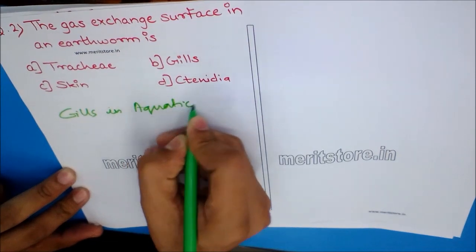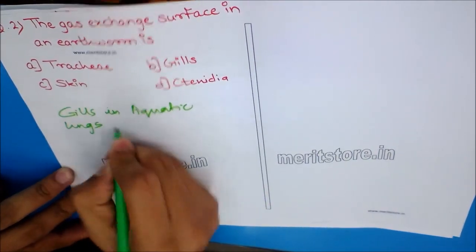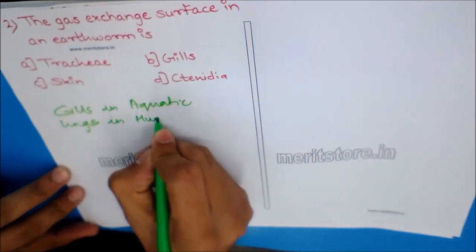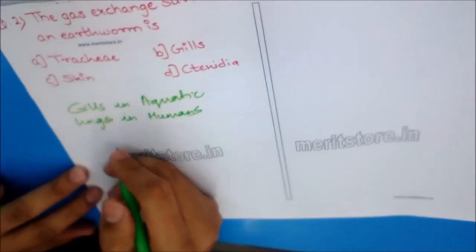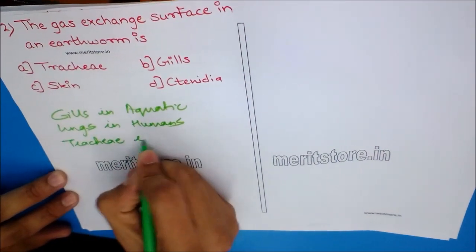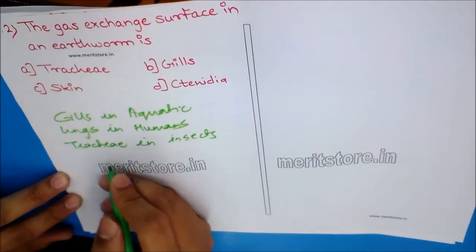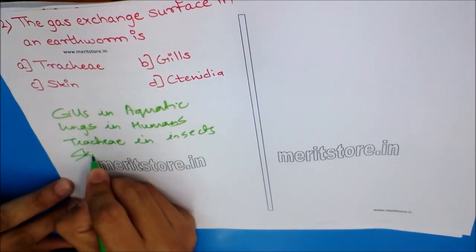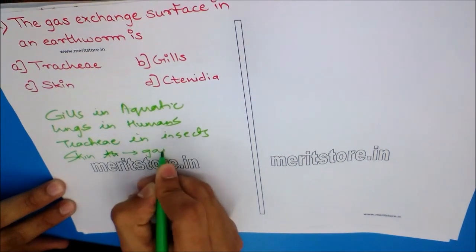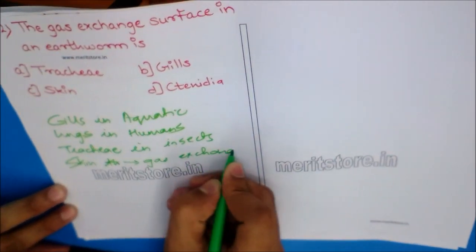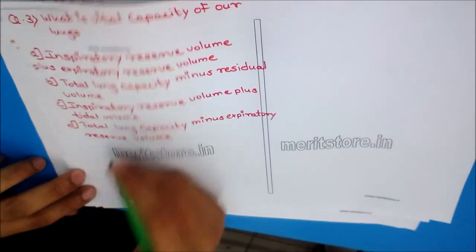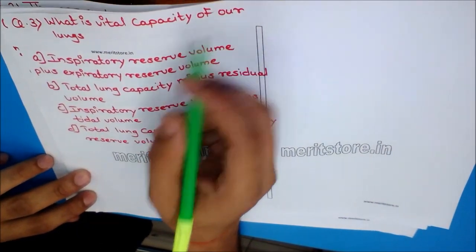Trachea or tracheoles are structures used for respiration in insects. Similarly, the skin performs the function of gas exchange in an earthworm. So the answer is option C — skin.